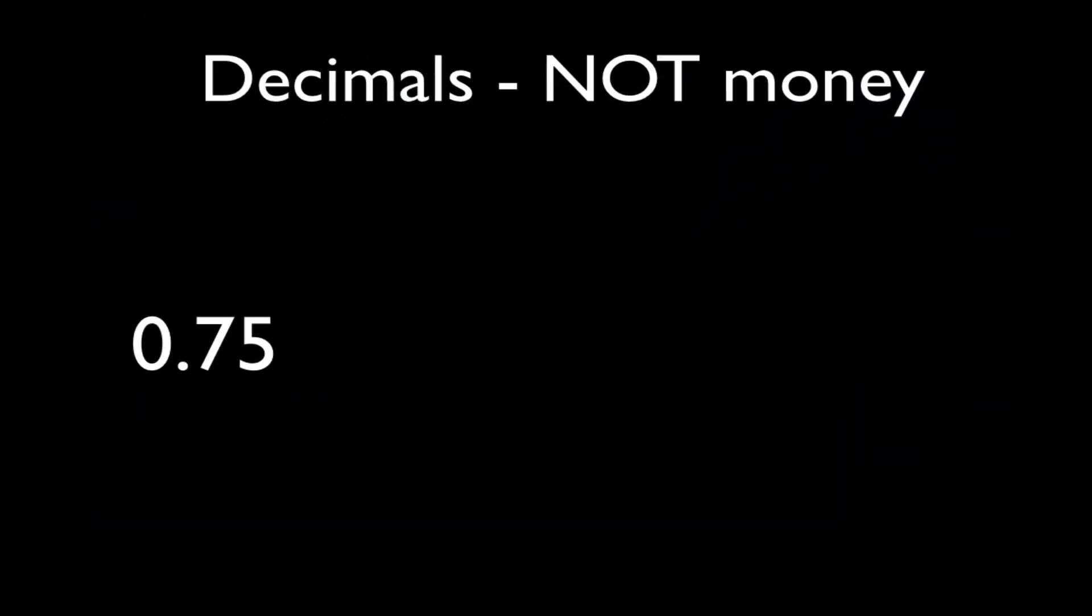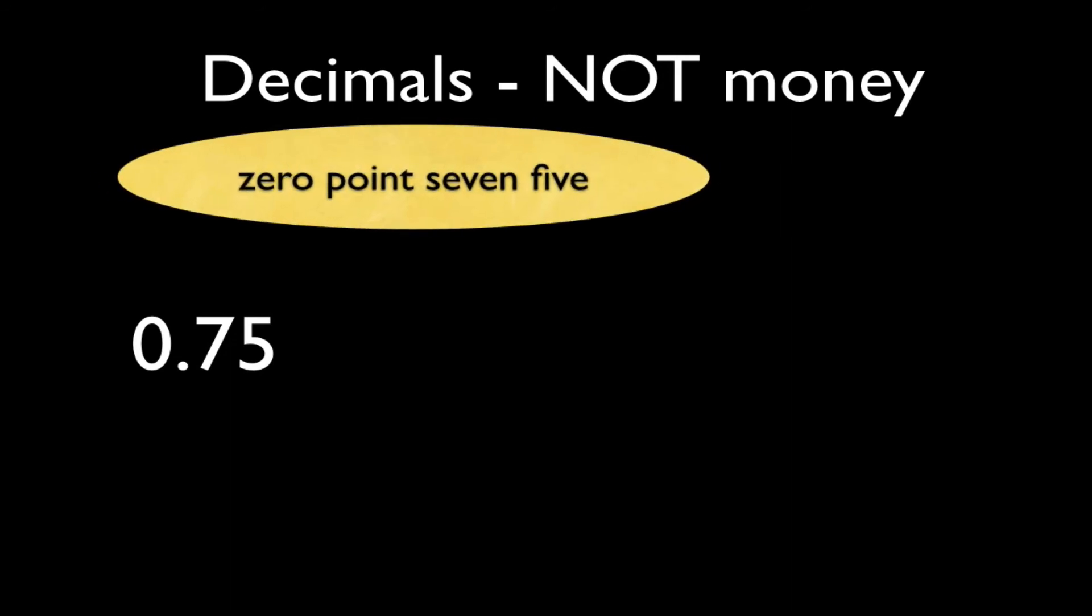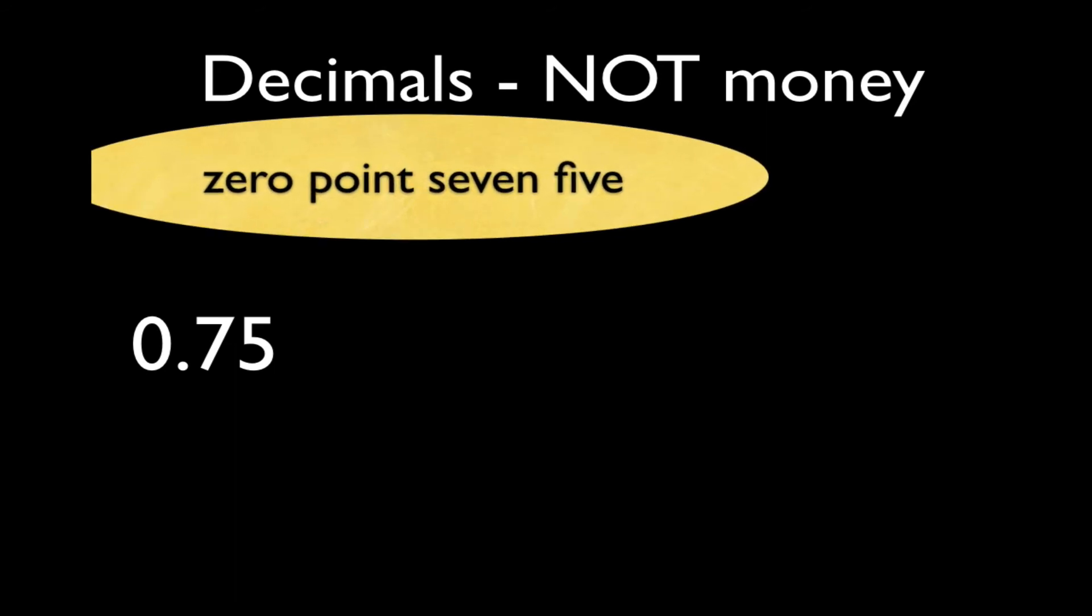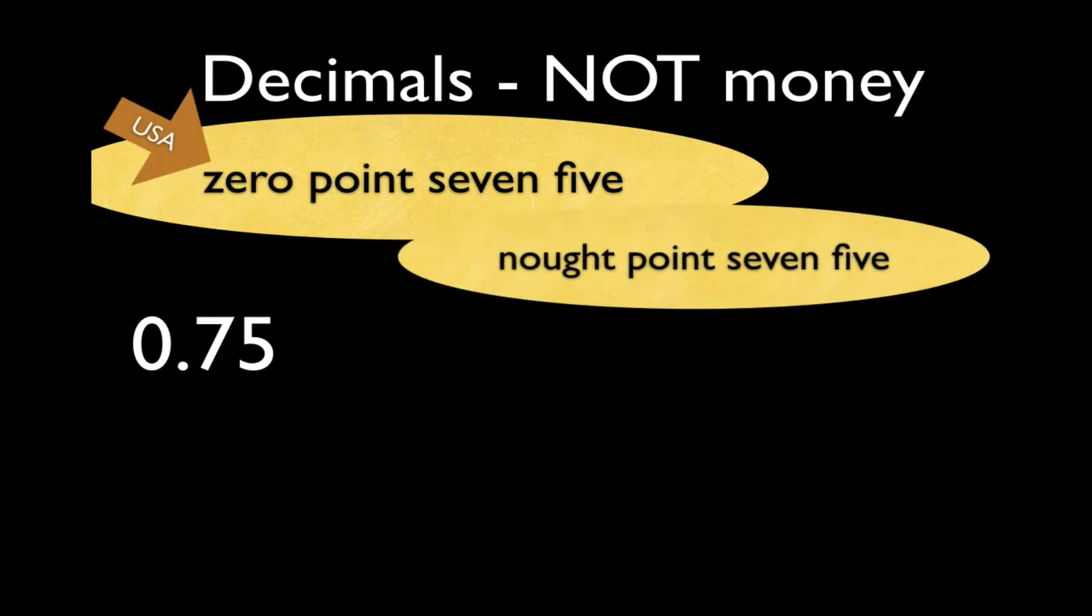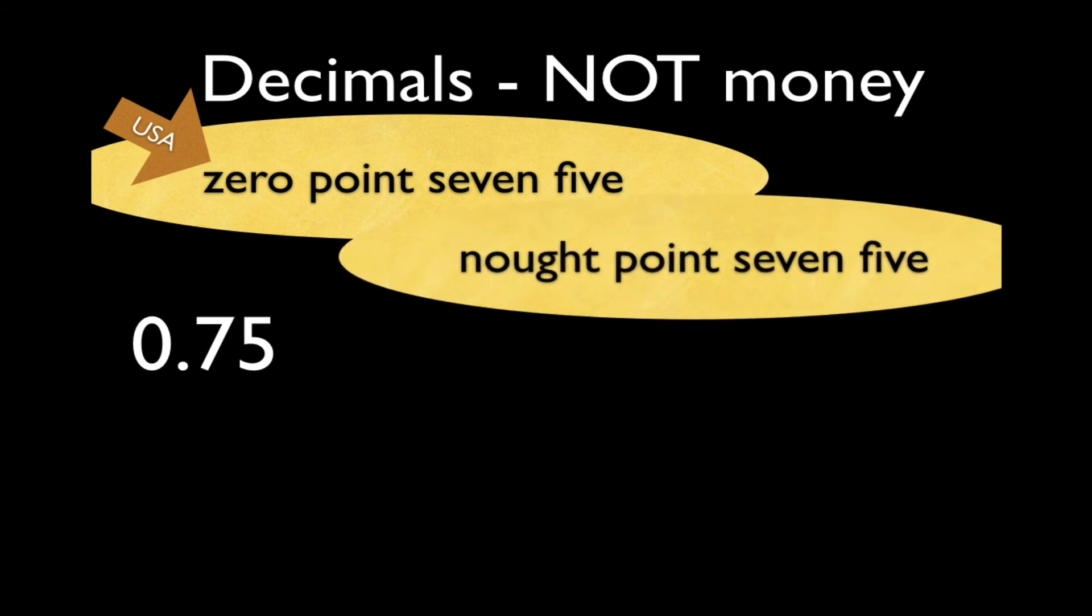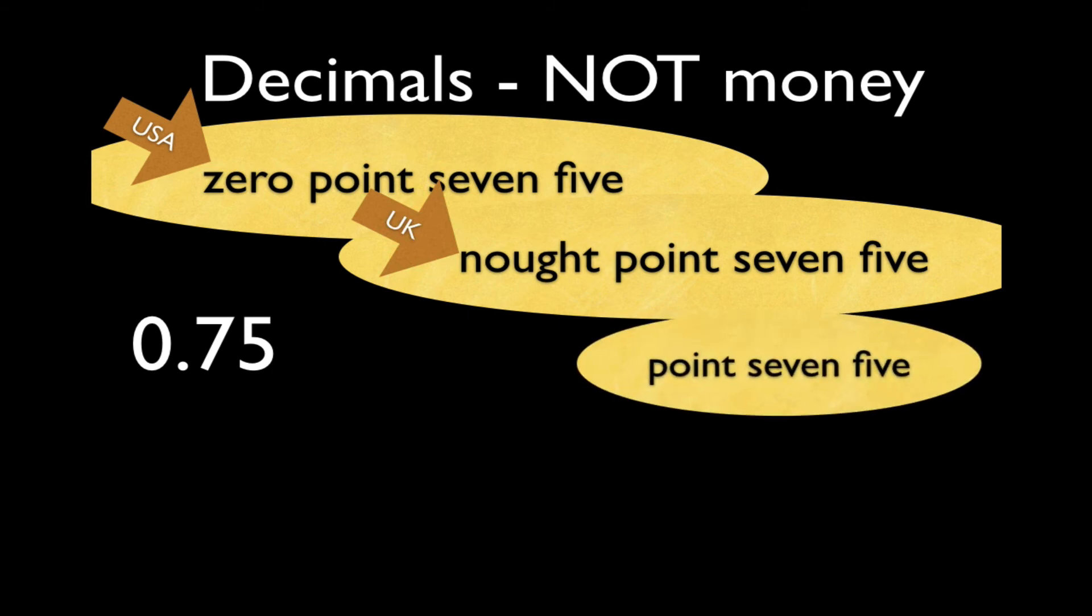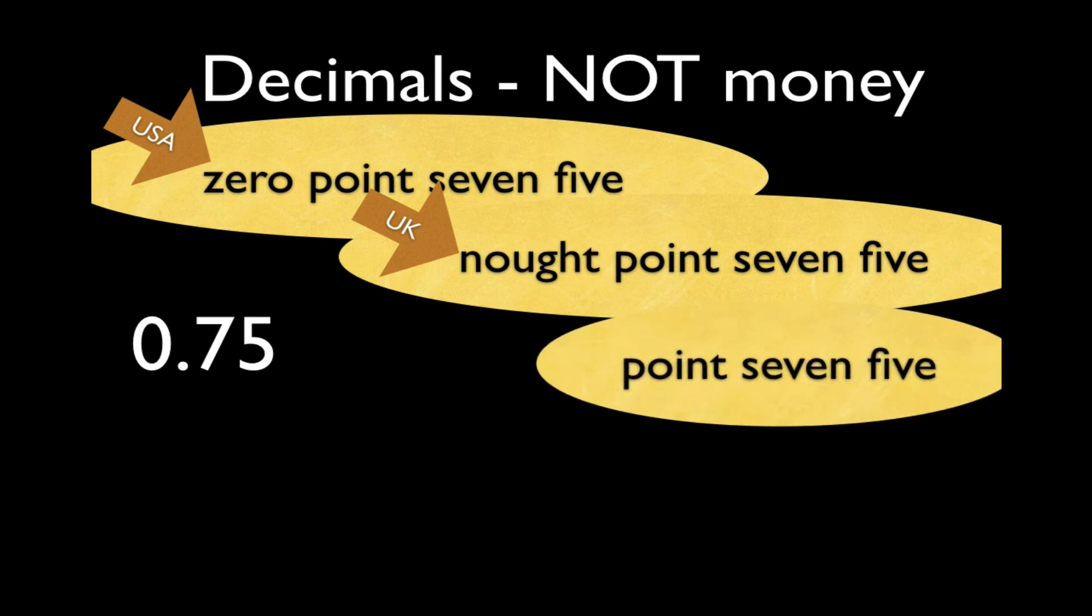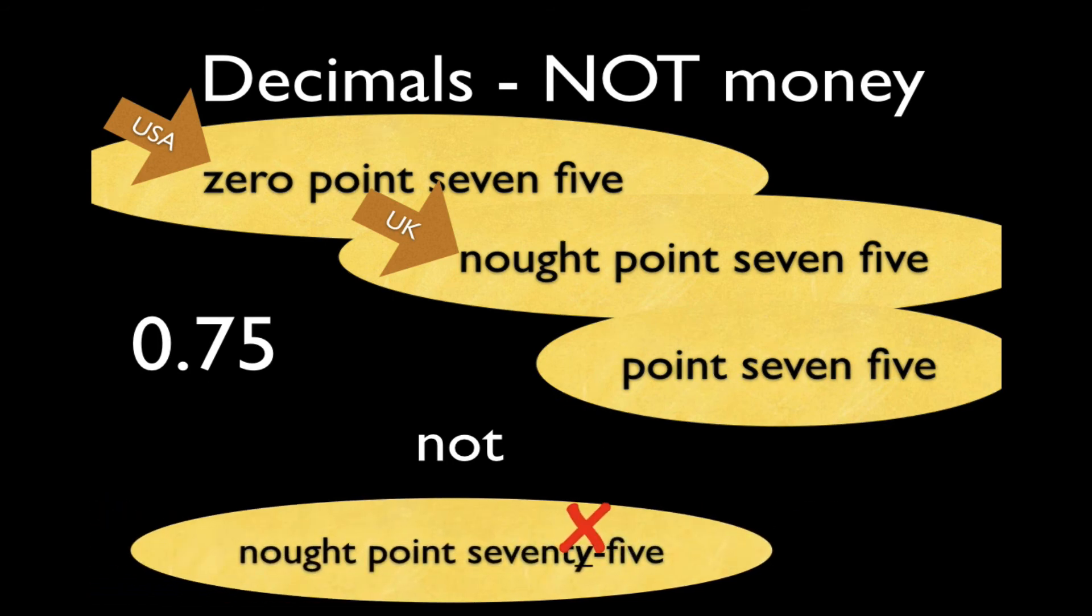Here's another example. You can say zero point seven five, zero point seven five, which is common in American English. Or you can say nought point seven five, nought point seven five, which is common in British English. You might also hear point seven five, so leaving out the zero or the nought. Point seven five. What you shouldn't say is nought point seventy-five. That's wrong.